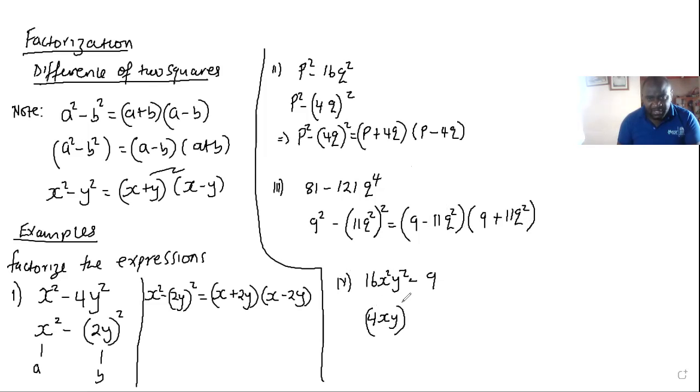So that this can take us to 4xy minus 3 in brackets, 4xy plus 3. These are all solutions to factorization of terms using the method of what we call the method of difference of two squares.